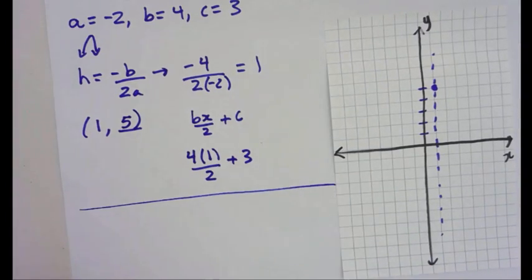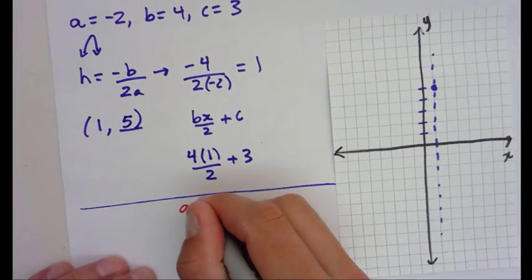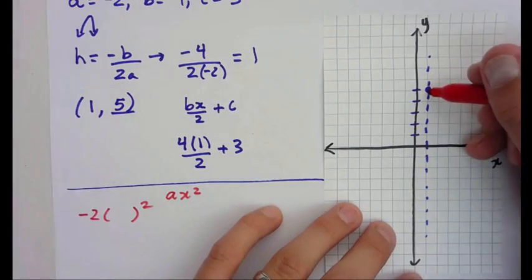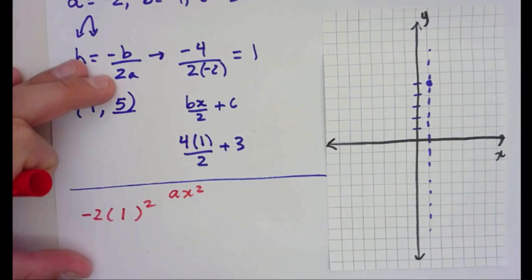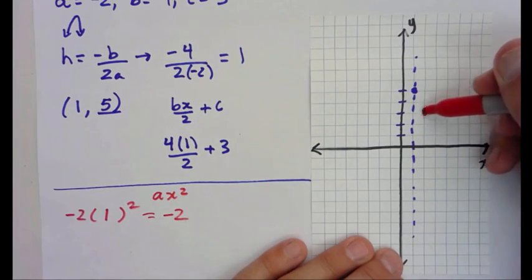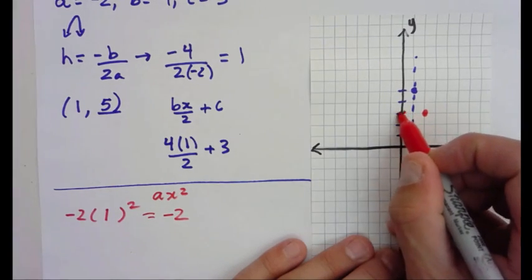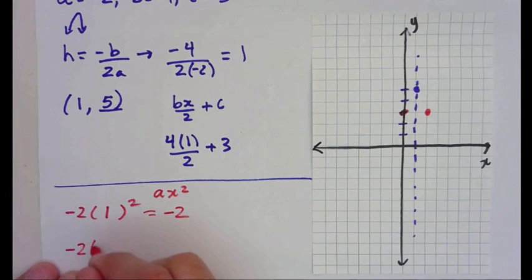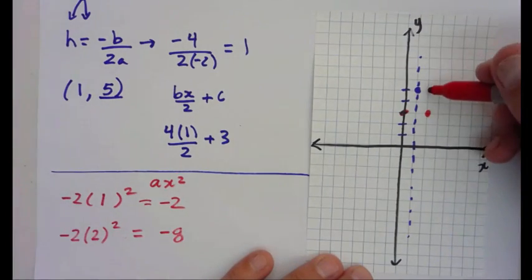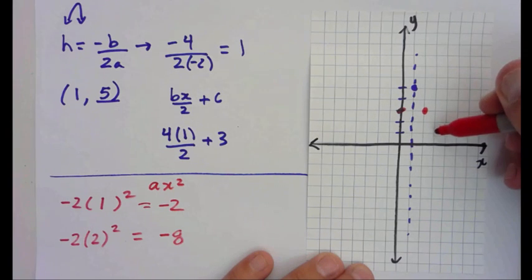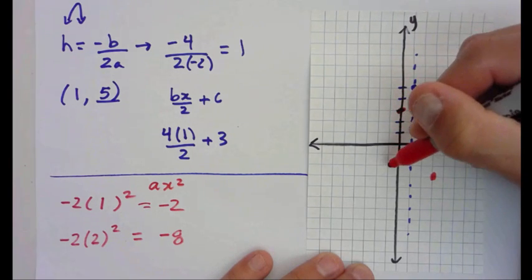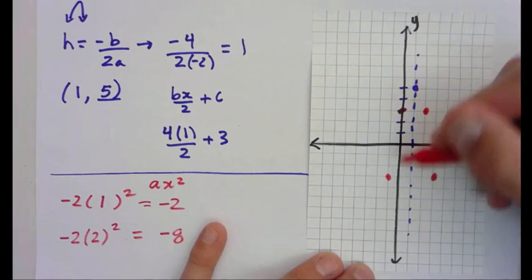Now we find our extra points using ax squared, where a is negative 2. Going 1 to the right of the vertex: 1 squared times negative 2 is negative 2, so we go 1 over and 2 down. It's the same on the other side. Going 2 over: 2 squared is 4, times negative 2 is negative 8 units down. I go 1, 2 spaces over and count down 8. The mirror point on the left matches. Now I can sketch my parabola opening downward.